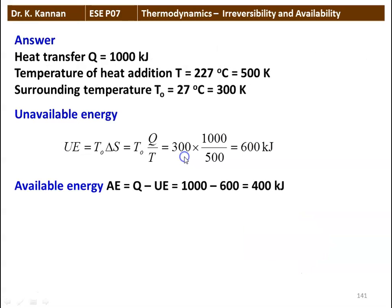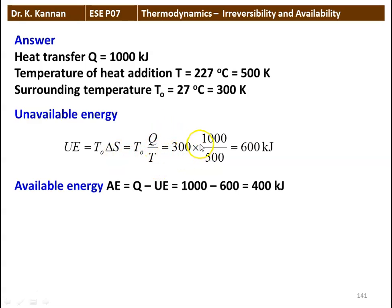Here is the solution. Heat transfer Q equals 1000 kilojoules. Temperature of heat addition T equals 227 degrees Celsius, which is 500 Kelvin. Surrounding temperature T0 equals 27 degrees Celsius, which is 300 Kelvin. Unavailable energy UE equals T0 times delta S, where delta S equals Q by T: 300 times 1000 divided by 500 equals 600 kilojoules. Available energy AE equals Q minus unavailable energy: 1000 minus 600 equals 400 kilojoules.